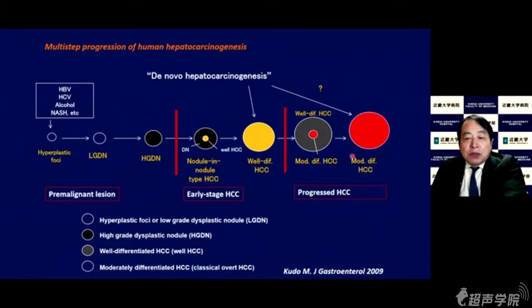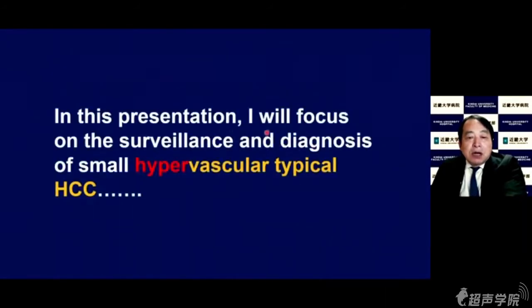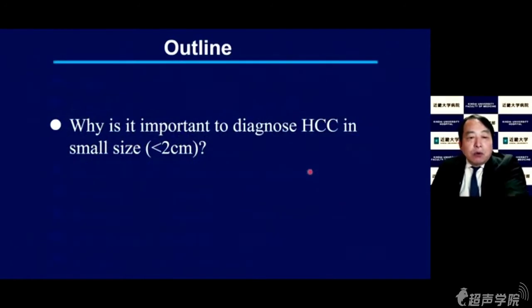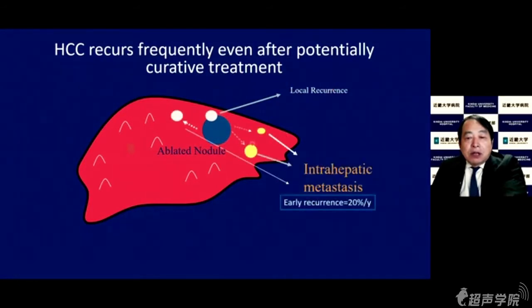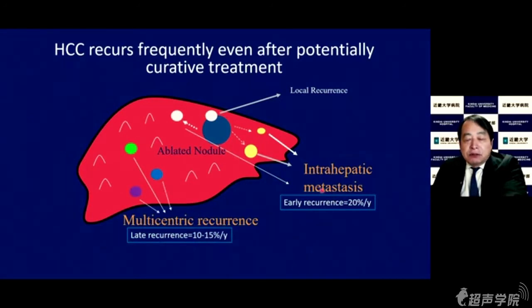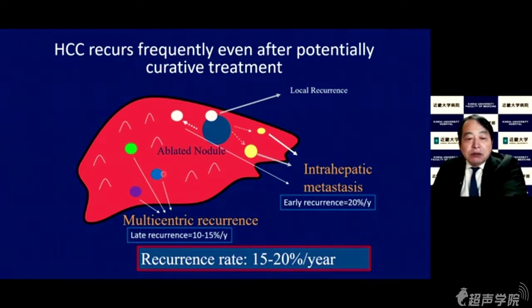The most important thing is correctly diagnosing progressive HCC. In this presentation, I will focus on the surveillance and diagnosis of small hypervascular typical HCC. It is important to diagnose HCC at small size — less than two centimeters in diameter — because HCC recurs frequently even after potentially curative treatment such as ablation or resection. Local recurrence or intrahepatic metastasis occurs very frequently, called early recurrence, around 20% annually. Multicentric recurrence occurs at 10 to 15% annually, called late recurrence, and overall recurrence rate is 15 to 20% per year.